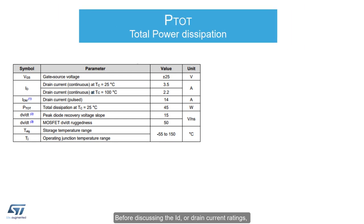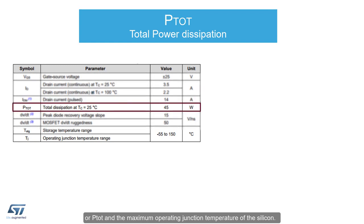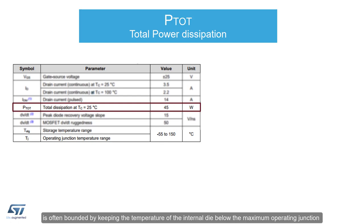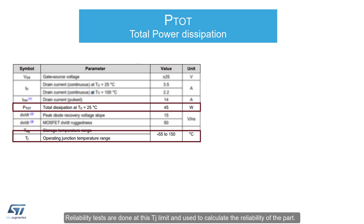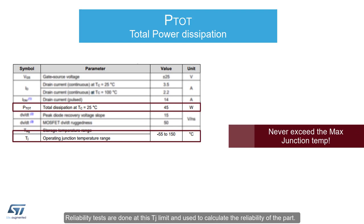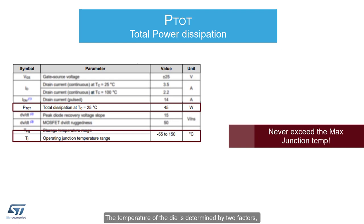Before discussing the ID, or drain current ratings, it's beneficial to discuss the Total Power Dissipation Rating, or P-TOT, and the maximum operating junction temperature of the silicon. The MOSFET's performance limit, whether in switching frequency or current conduction, is often bounded by keeping the temperature of the internal die below the maximum operating junction temperature, or TJ. Reliability tests are done at this TJ limit and used to calculate the reliability of the part. Operating below this temperature is key to ensuring long life. The temperature of the die is determined by two factors: package or case temperature, and internal power dissipation.